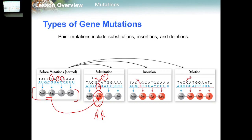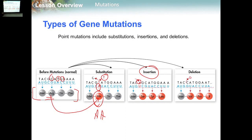The insertion mutation is when we insert a new nucleotide. For example, TACG becomes TACAG — an extra nucleotide is added. In the case of insertion, we will change all of the sequence of amino acids after the point of insertion.